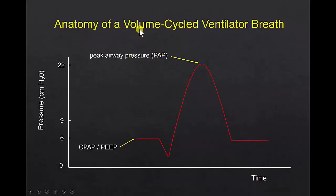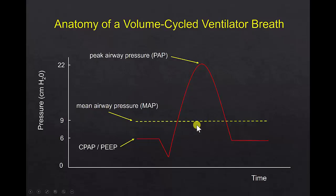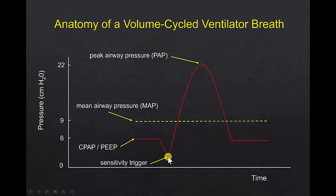This is the anatomy of a volume-cycled ventilator breath. The breath starts at a low pressure called CPAP or PEEP, in this case 6, and after the volume is delivered the peak airway pressure goes up to a high value — in this case 22 — which depends on the volume, lung compliance, and patient effort. The mean pressure is the average pressure; here it's 9, closer to 6 because the patient spends much more time at the lower pressure. The sensitivity trigger is how negative the pressure must drop to get the ventilator to recognize an effort — in this case a pressure trigger of about minus 4.